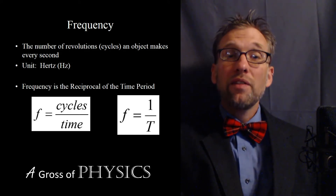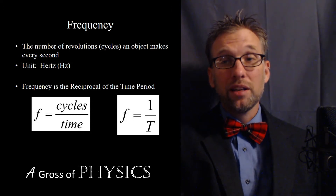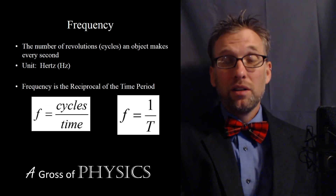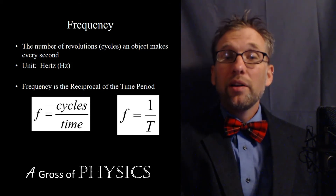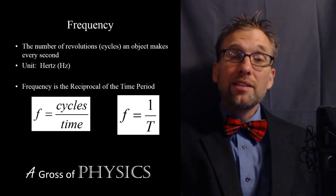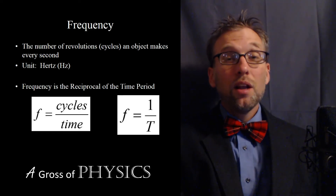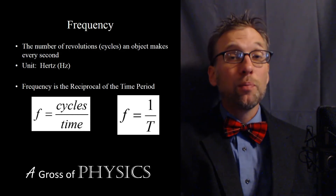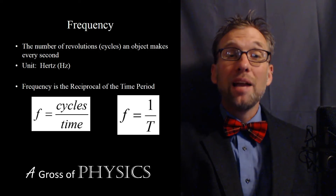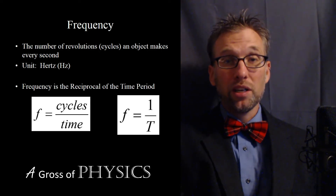The equation for frequency is cycles over seconds, and the unit is one over seconds, which we simplify to hertz. Radio stations broadcast frequencies in hertz — AM is in megahertz (10⁶ Hz) and FM is in kilohertz (10³ Hz). Frequency and time period are reciprocals: as one goes up the other goes down. The equation for time period is 1/f and frequency is 1/T.